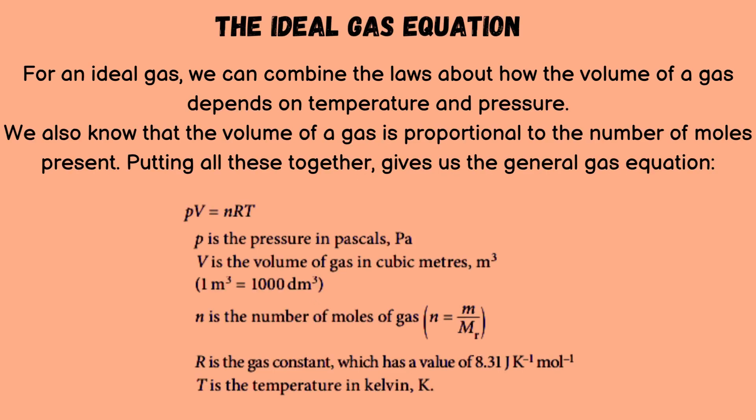For an ideal gas, we can combine the laws about how the volume of a gas depends on temperature and pressure. We also know that the volume of a gas is proportional to the number of moles present. Putting all these together gives us the general gas equation PV = nRT, where P is the pressure in pascals, and V is the volume of gas in cubic meters — one cubic meter equals 1000 dm³.